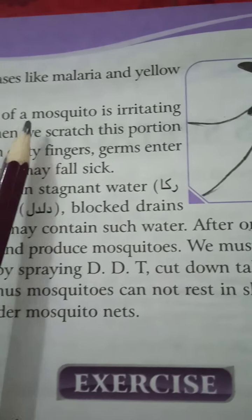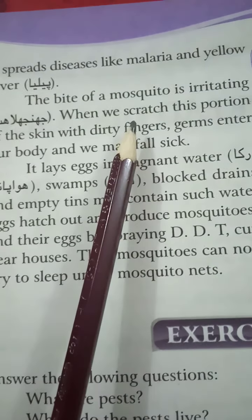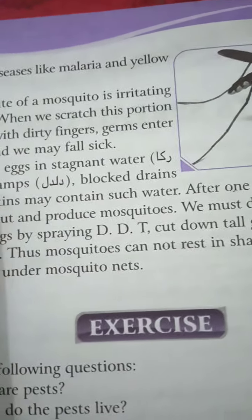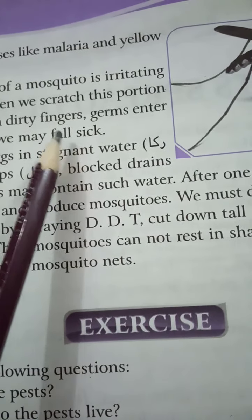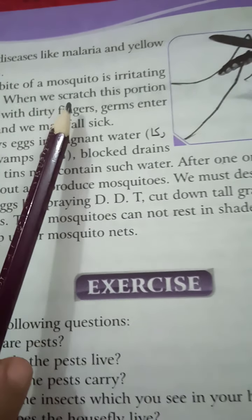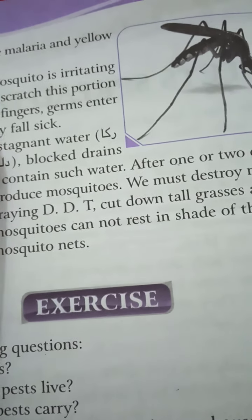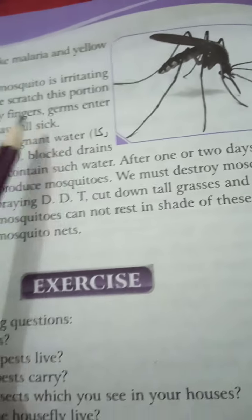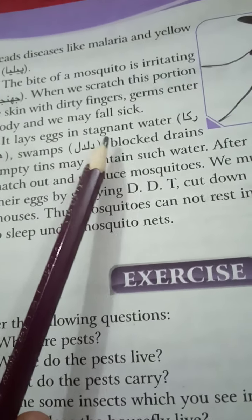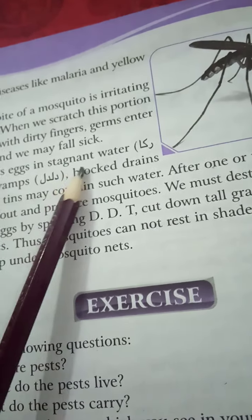This insect also carries disease germs. It bites us and sucks our blood — thus germs enter our body and we become ill. Mosquitoes spread diseases like malaria and yellow fever. (مچھر ہمیں کاٹتا ہے اور ہمارا خون چوستا ہے؛ اس طرح جراثیم ہمارے جسم میں داخل ہو جاتے ہیں اور ہم بیمار پڑ جاتے ہیں۔)